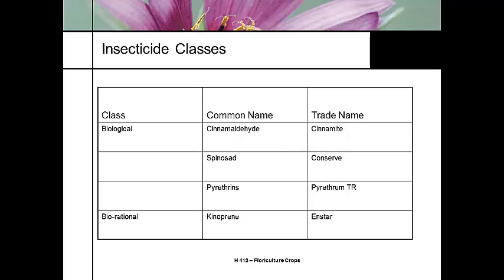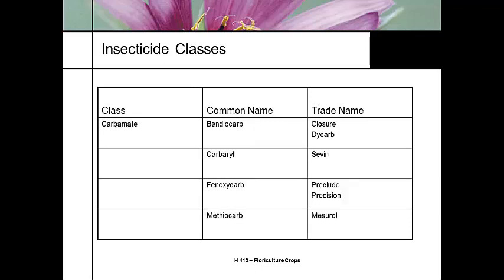Pyrethrins are a family of biologicals — pyrethrin is an extract from the pyrethrin flower, commonly used in the organic tomato trade. Bio-rationals, such as kinoprene (trade name Enstar), are insect growth regulators that disrupt the ability of an insect to progress to its next life cycle stage. Carbamates are some of the older pesticides — bendiocarb, carbaryl (which is Sevin, still available to homeowners). Methiocarb is used for slug and snail bait and is pretty toxic, especially to dogs.